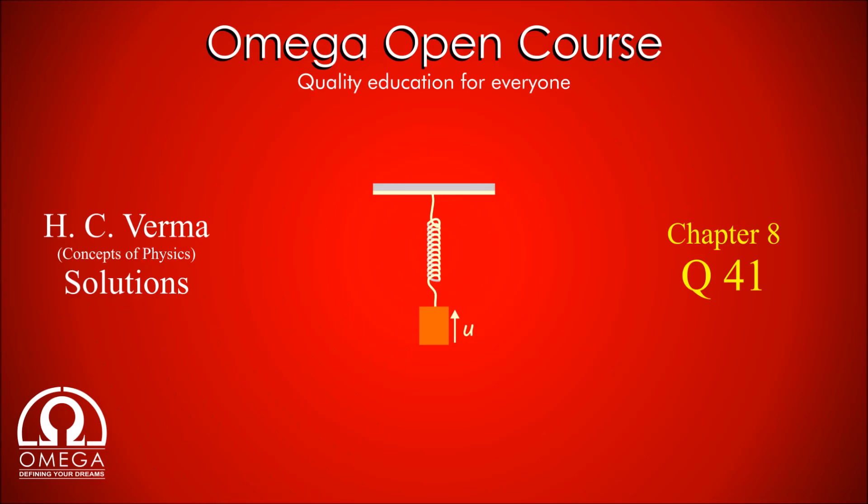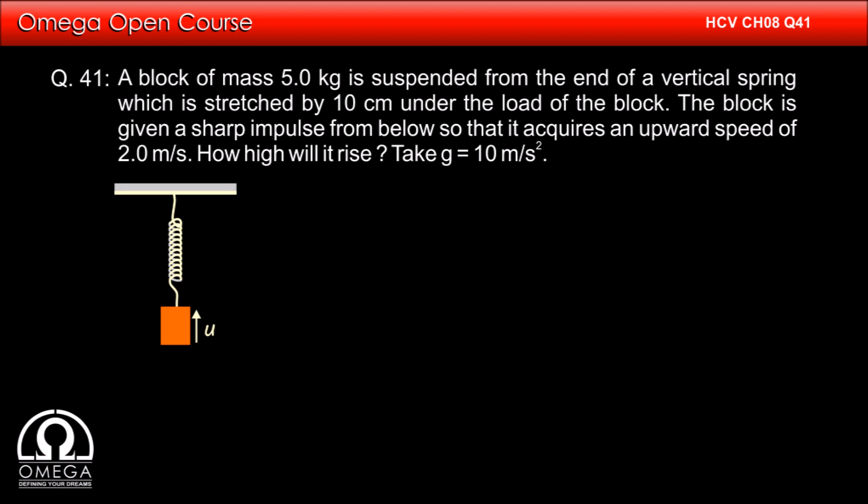Question 41: A block of mass 5 kg is suspended from the end of a vertical spring which is stretched by 10 cm under the load of the block. The block is given a sharp impulse from below so that it acquires an upward speed of 2 m per second. How high will it rise?